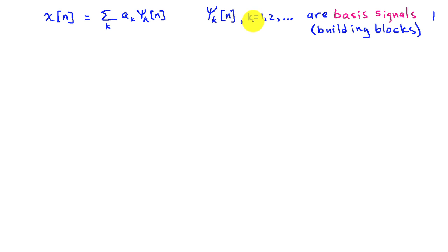And we have a bunch of these, k equals 1, 2, and so on. So we're saying that we're using these psi k's as building blocks to construct our signal, x of n.